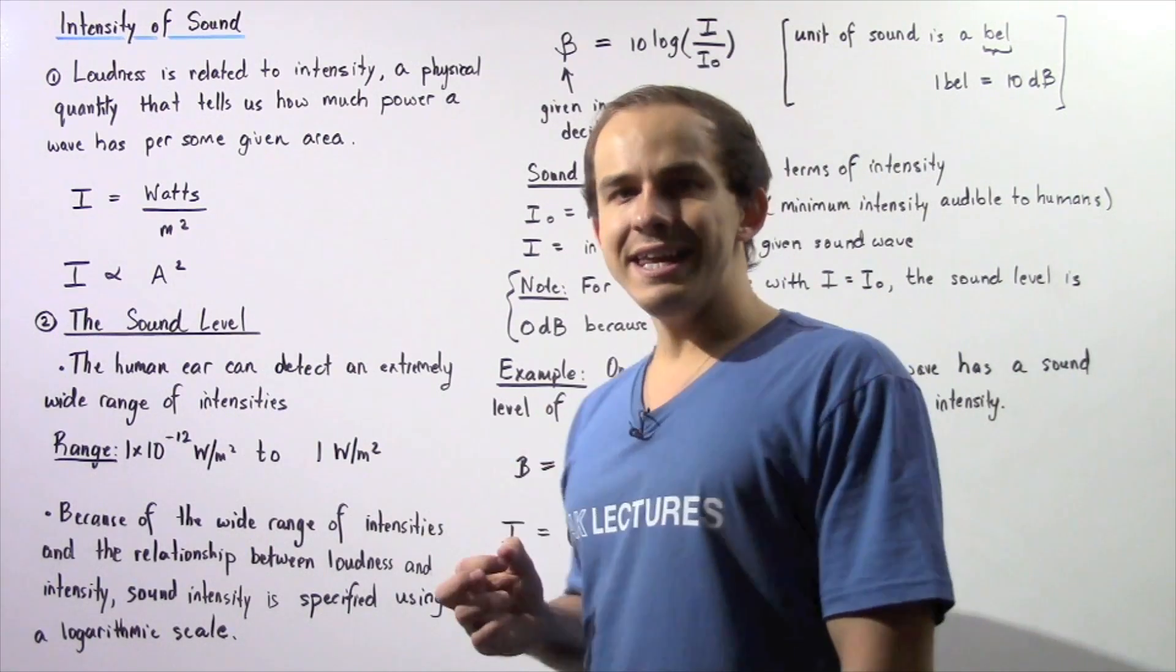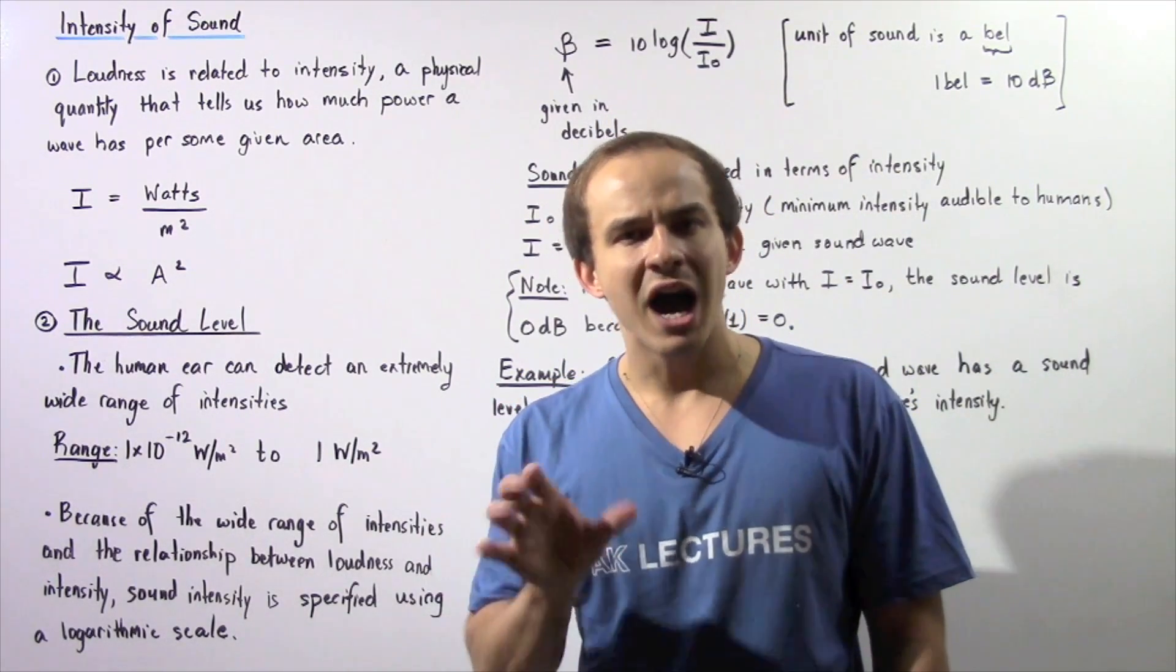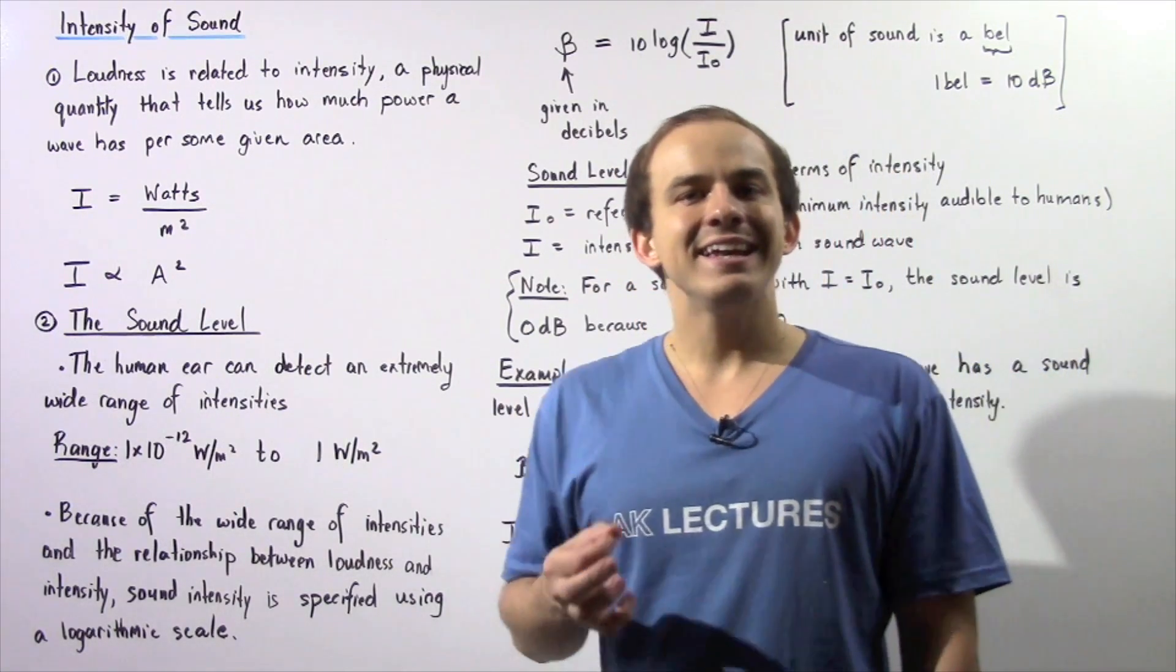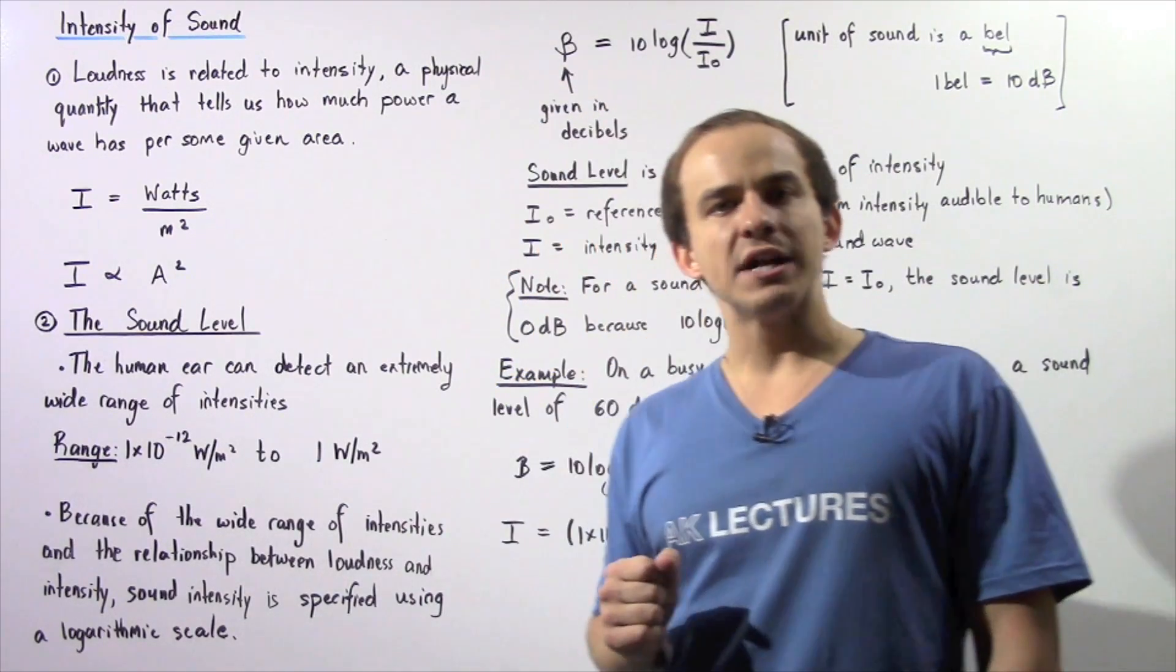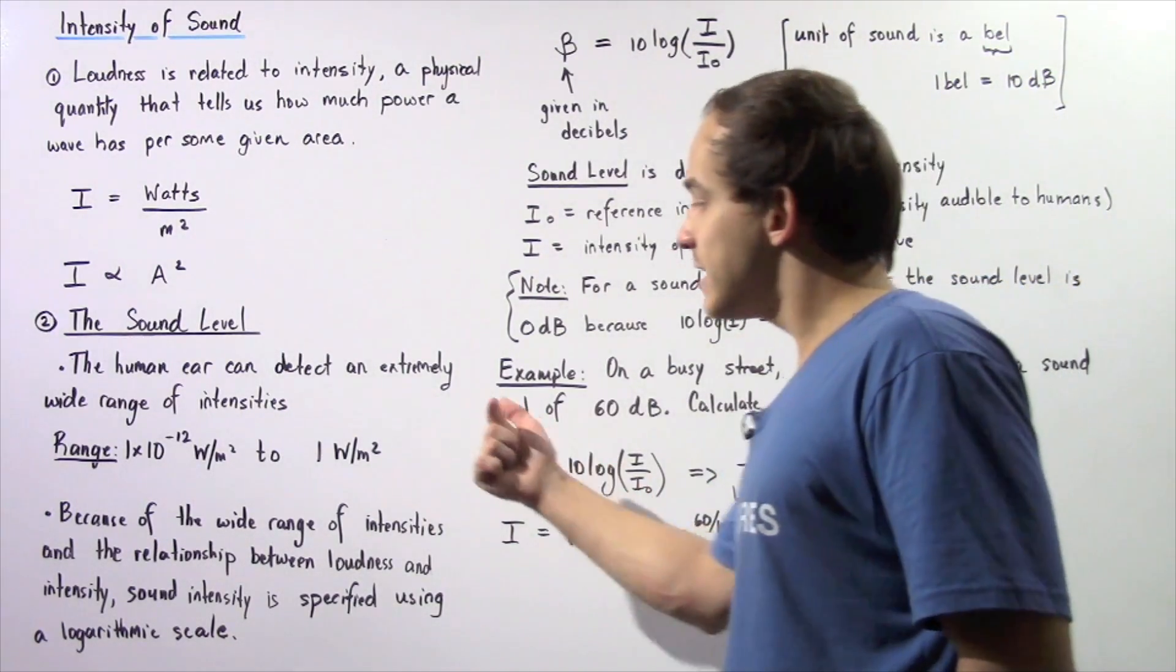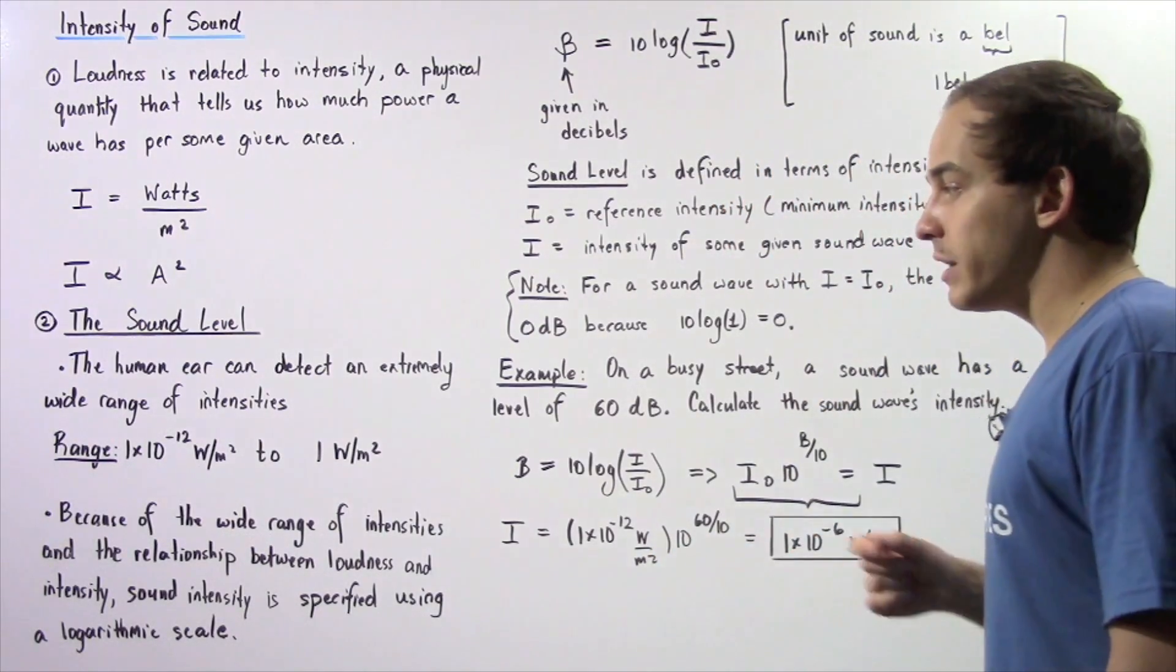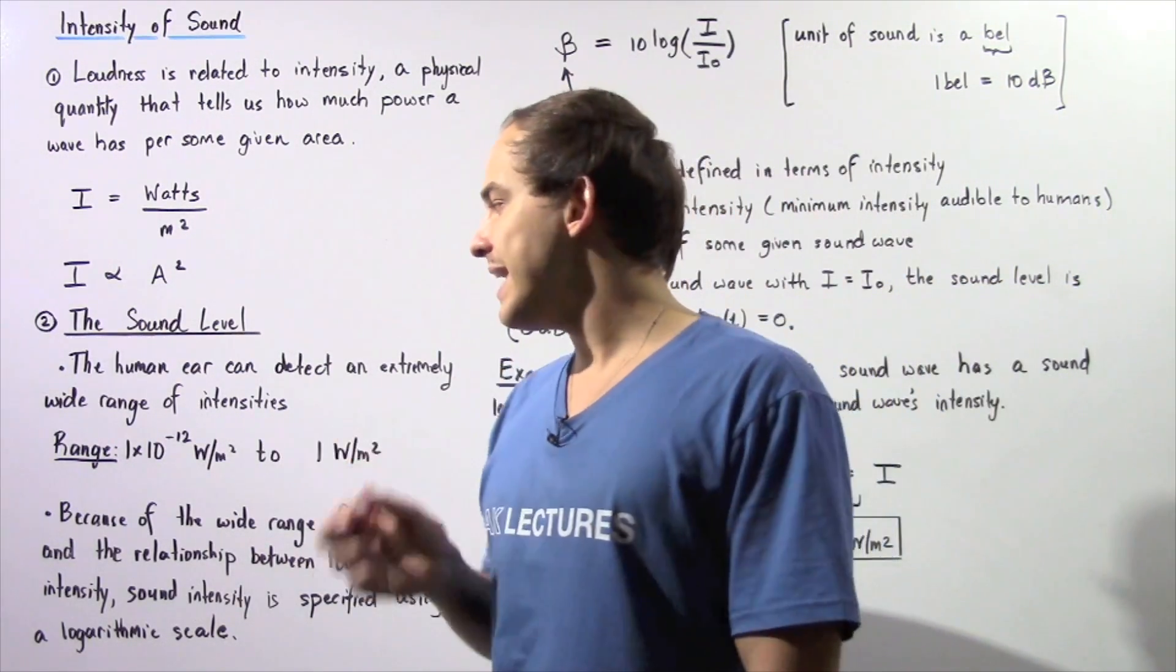The human ear is capable of detecting an extremely wide range of intensity values, beginning as low as 1 × 10^-12 watts per meter squared and going as high as 1 watt per meter squared. Actually, the intensities can be even higher than this value, but if we go any higher that will be extremely painful.